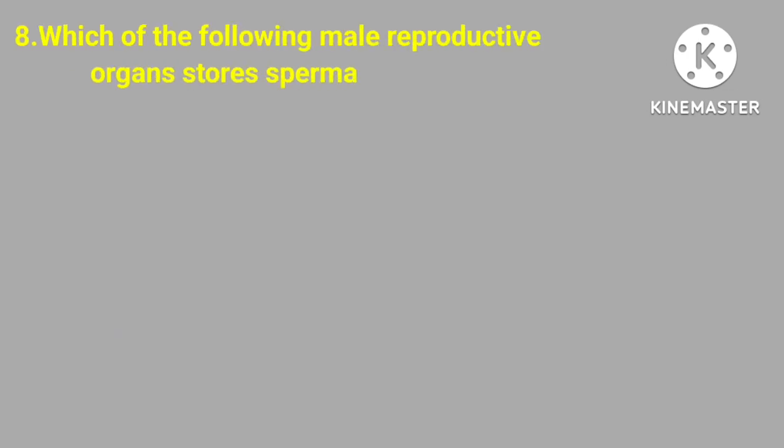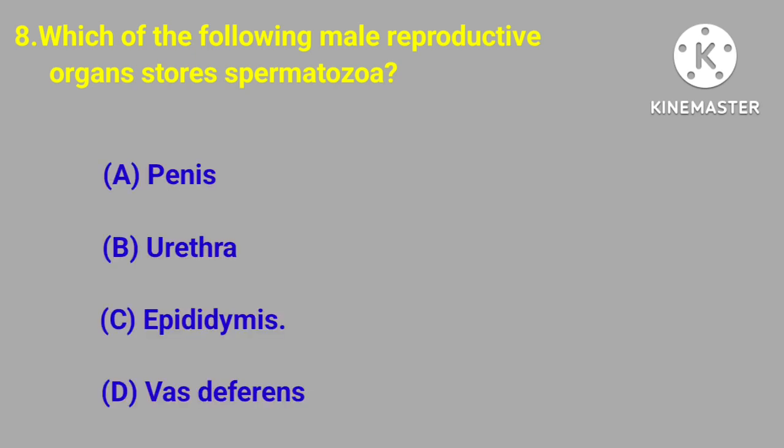Question number eight. Which of the following male reproductive organs stores spermatozoa? Penis, urethra, epididymis, vas deferens. Correct answer is epididymis.